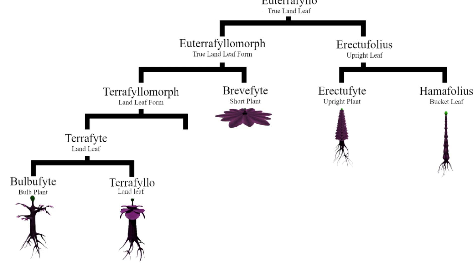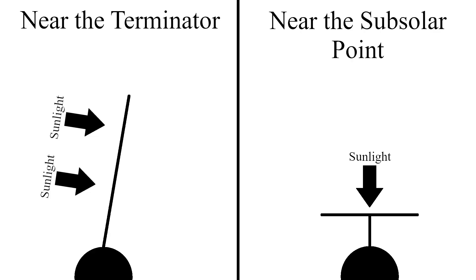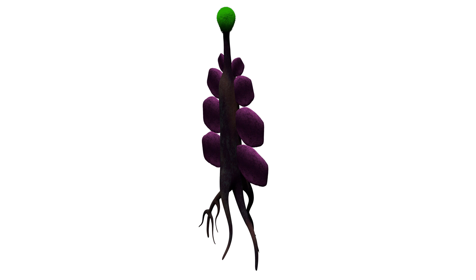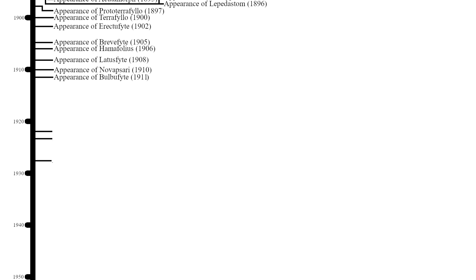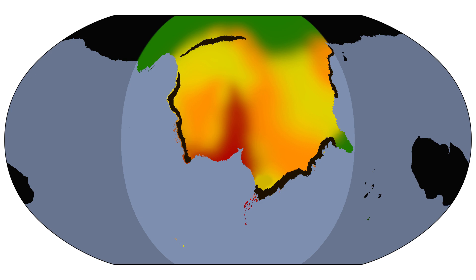Remember, the further we move from the subsolar point, the closer the star in the sky is to the horizon. In these areas, it is less beneficial to have a large surface area pointing up, and more beneficial to have a large surface area pointing sideways. Perhaps a clade of basal Terraphylo native to this northern area evolved to have all of their leaves point sideways. We will name them Lattisfite, and they will appear 1.908 billion years into the timeline. This clade will find great success in cool climates. However, for the time being, the coldest areas near the terminator will remain largely uninhabited by any species of flora.